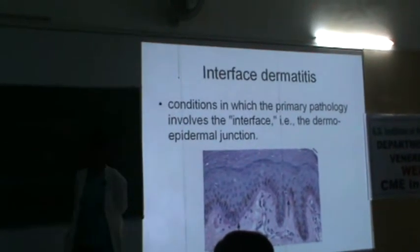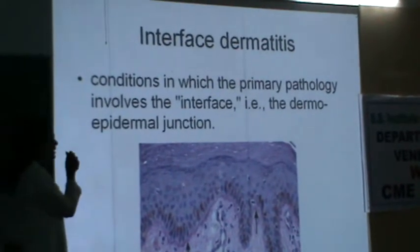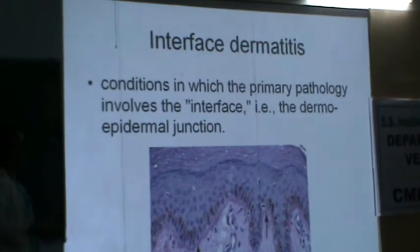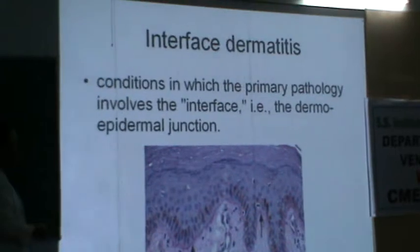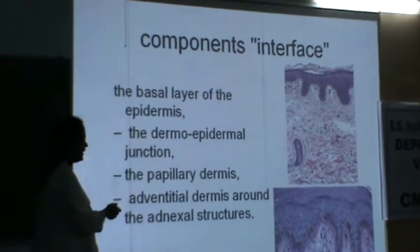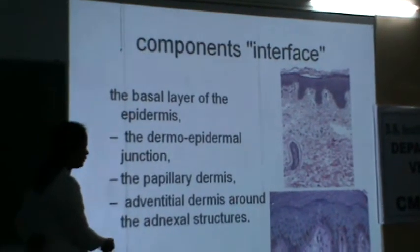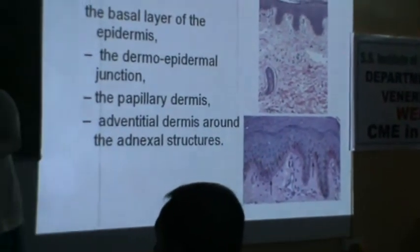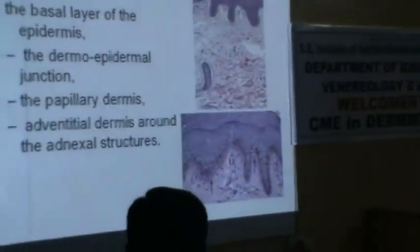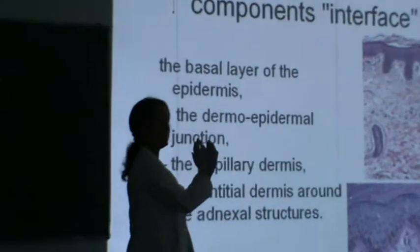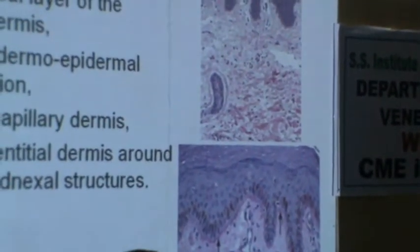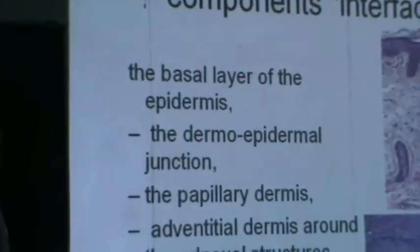What is interface dermatitis? All of us know about dermatitis. So let us define this term: interface dermatitis refers to conditions in which the primary pathology involves an interface — the dermo-epidermal junction. The components of the interphase include the basal layer of the epidermis — you can appreciate the basal cells standing out like pillars, elongated cells. At the apex of the basal cells they contain melanin. Then the dermo-epidermal junction.